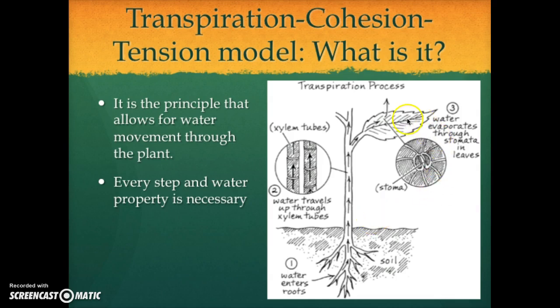Now this picture right here is an overview of everything that happens. Water goes in through the roots, up the xylem as you can see here, and it will evaporate through transpiration through the underside of the leaf through the stomata right here. This whole process will begin again and again. Now let's look at each step individually.